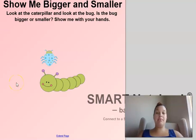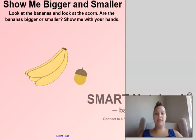Look at the caterpillar and look at the bug. Is the bug bigger or smaller than the caterpillar? The bug is smaller than the caterpillar. The bug is smaller than the caterpillar. And the caterpillar is what? Than the bug? Bigger than the bug. Love those vocab words. Look at the banana and look at the acorn. Are the bananas bigger or smaller than the acorn? The bananas are bigger than the acorn. The bananas are bigger than the acorn. And the acorn is smaller than the bananas.